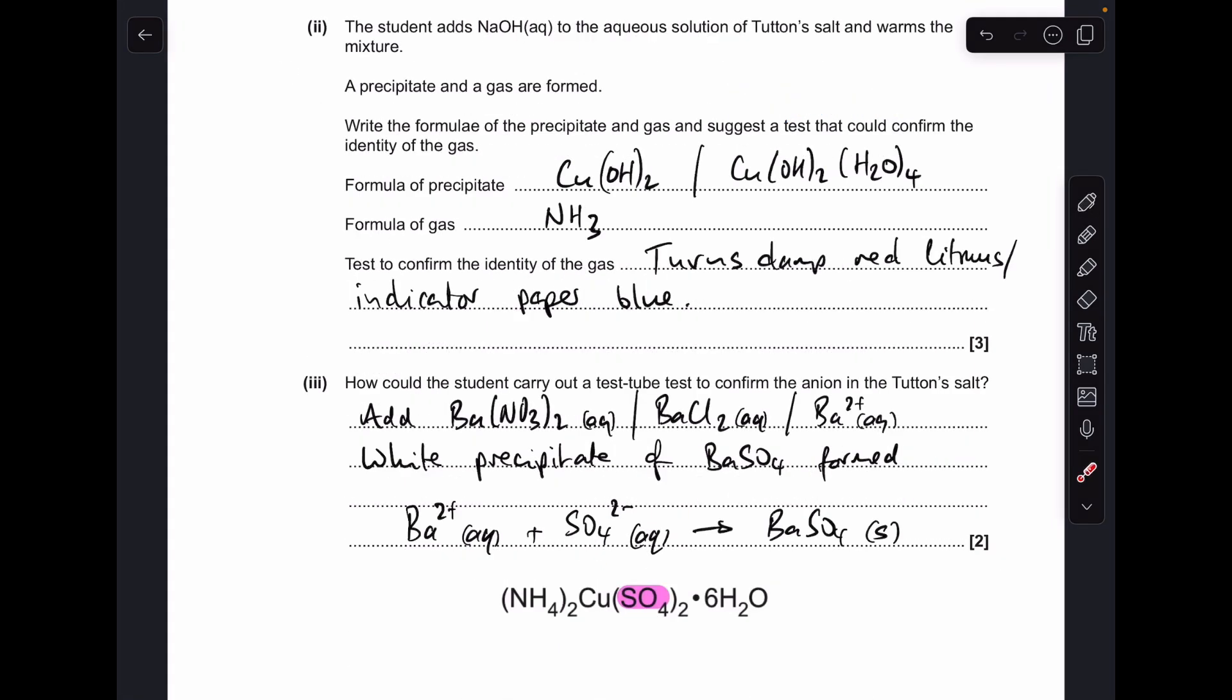And finally the test tube reaction to confirm the anion in the tutton salt. Well the anion is the sulphate ion. So you would add a source of barium ions basically. So aqueous barium nitrate, aqueous barium chloride or you could just say aqueous Ba2+ ions. And you get a white precipitate of barium sulphate formed. I've put an equation in but they didn't ask for one. I would always put one in just to back up my answer.